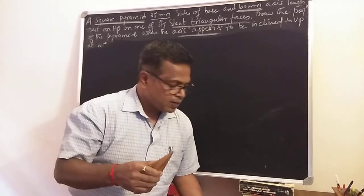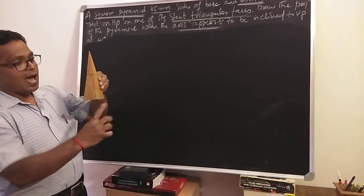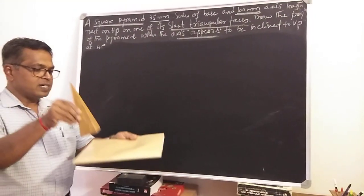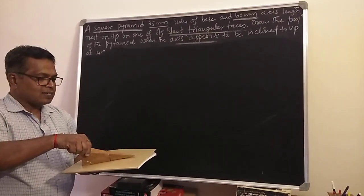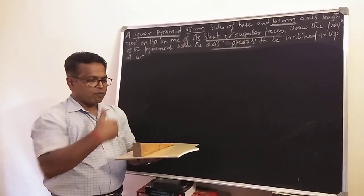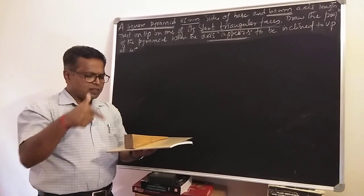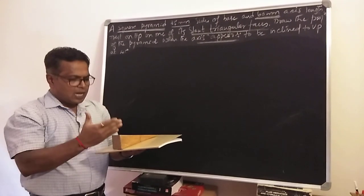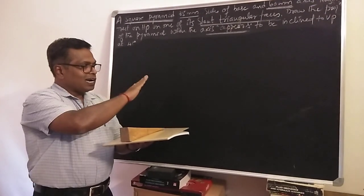This problem involves a square pyramid with side of base 35mm and axis height 60mm, resting on HP on one of its slant triangular faces, where the axis of the pyramid appears to be inclined to VP at 45 degrees. We need to draw the top view and front view. We cannot draw them directly because the pyramid is inclined to both HP and VP.